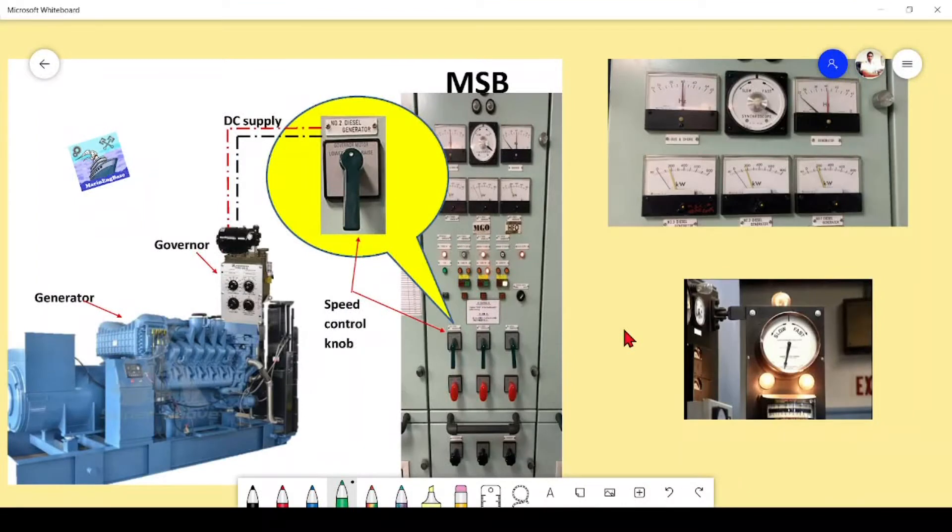In the previous session we discussed load isochronous and droop AVR droop and the importance of droop, how the load and speed, and the requirements of isochronous governor and droop governor for load sharing.